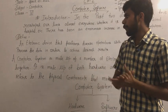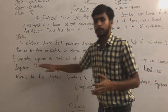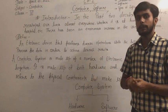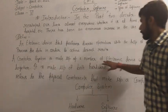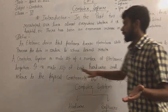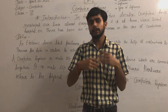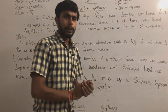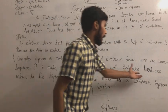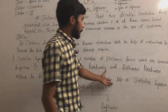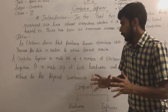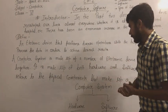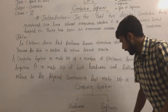If we move on to the computer system, a computer system is basically made up of hardware and software. A computer is made up of many electronic devices which are connected together, and it is made up of both hardware and software. Hardware refers to the physical components that make up a computer system — for example, the monitor and the CPU.